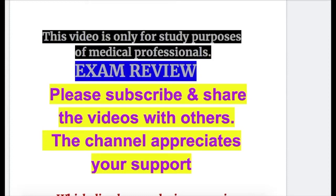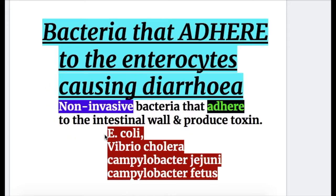In this video, we will do an exam review of the bacteria that adhere to the intestinal wall and cause diarrhea. We already discussed E. coli in the other video. In this video, we will discuss Vibrio cholerae and Campylobacter jejuni. Campylobacter fetus also causes diarrhea and infects the GI tract. Campylobacter jejuni is also included in the bacteria that invade the intestinal cells — initially non-invasive, it adheres to the wall and produces toxin, damages the cell, producing crypts and abscesses.